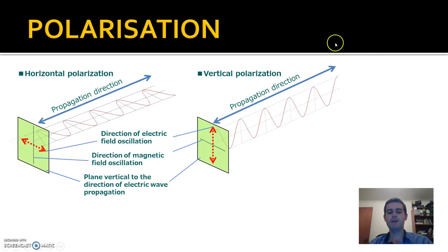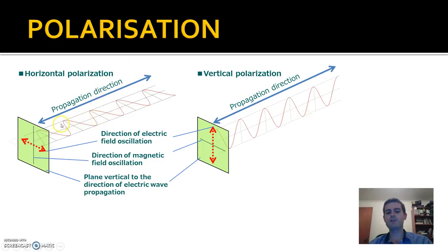Here we have two illustrations. The first shows horizontal polarization, where the electric field is going in and out in the horizontal direction. And over here we have vertical polarization with the electric field going up and down in the vertical direction. In both cases the electric field is at 90 degrees to the direction of propagation.